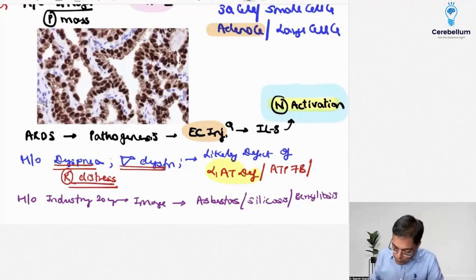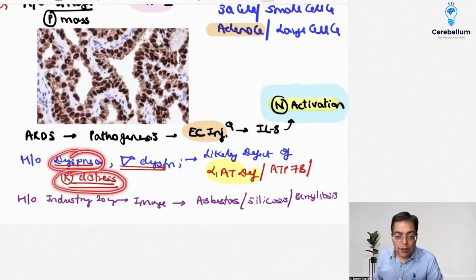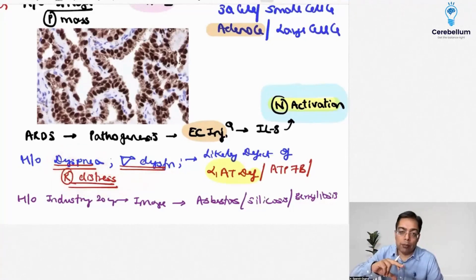We also got a question about a patient having a history of dyspnea or respiratory distress and the patient was having liver dysfunction. So combination of pulmonary manifestation along with hepatic manifestation, the likely defect in the patient is going to be.